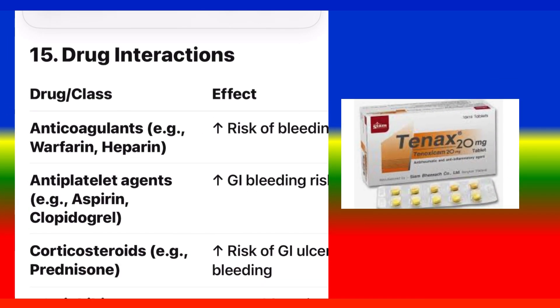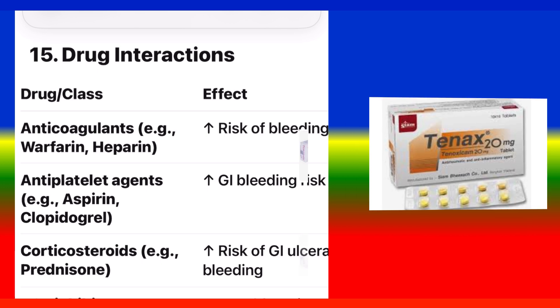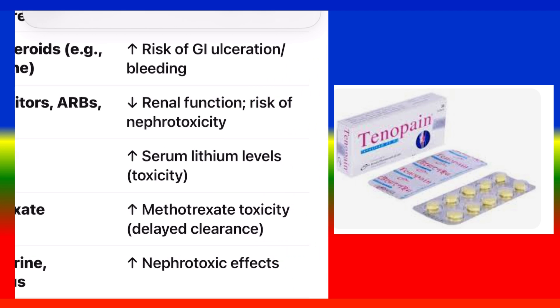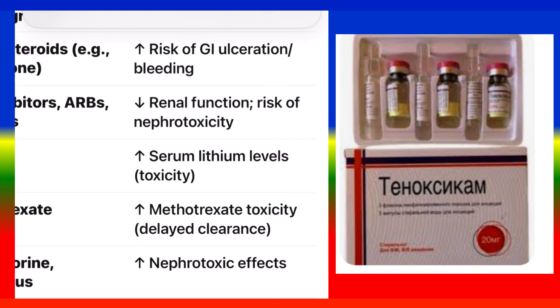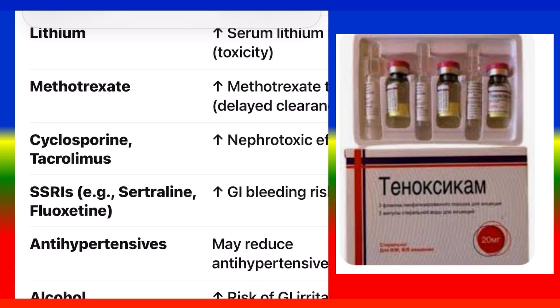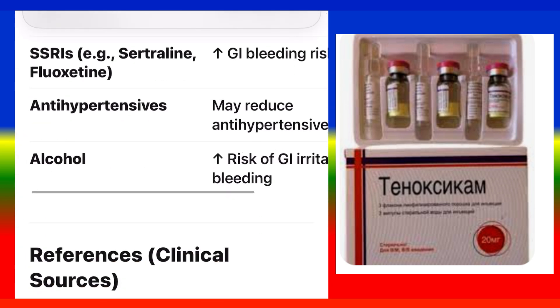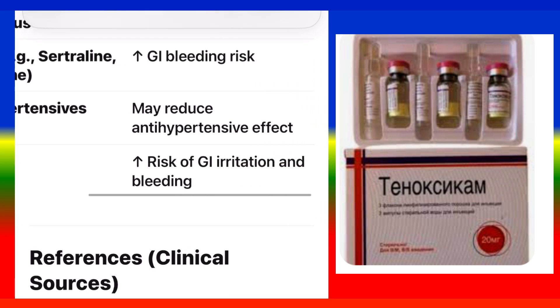Drug Interactions: Anticoagulants (e.g., warfarin, heparin) — increased risk of bleeding. Antiplatelet agents (e.g., aspirin, clopidogrel) — increased GI bleeding risk. Corticosteroids (e.g., prednisone) — risk of GI ulceration and bleeding. ACE inhibitors, ARBs, diuretics — reduced renal function, risk of nephrotoxicity. Lithium — increased serum lithium levels and toxicity. Methotrexate — increased methotrexate toxicity due to delayed clearance. Cyclosporine/tacrolimus — increased nephrotoxic effects. SSRIs (e.g., sertraline, fluoxetine) — increased GI bleeding risk. Antihypertensives — may reduce antihypertensive effect. Alcohol — increased risk of GI irritation and bleeding.